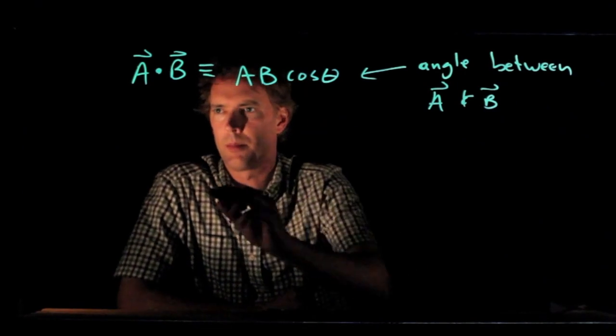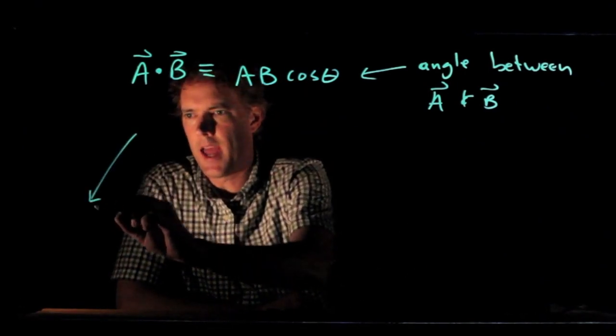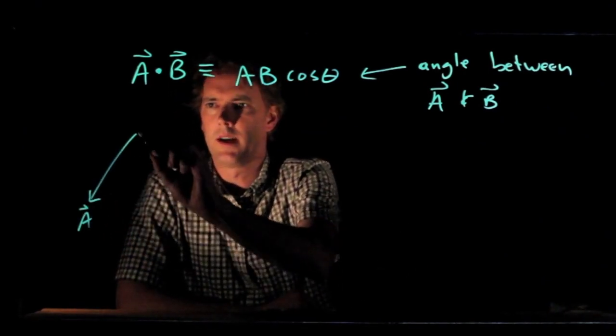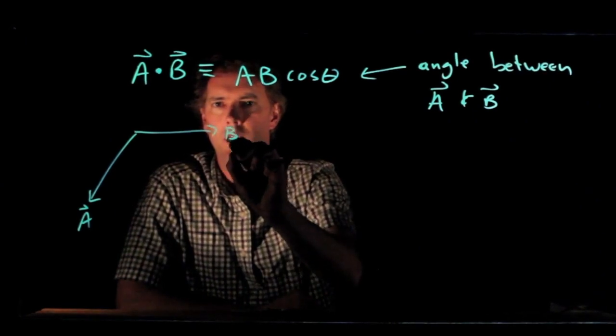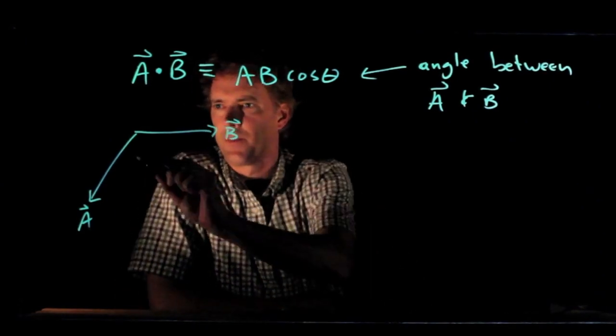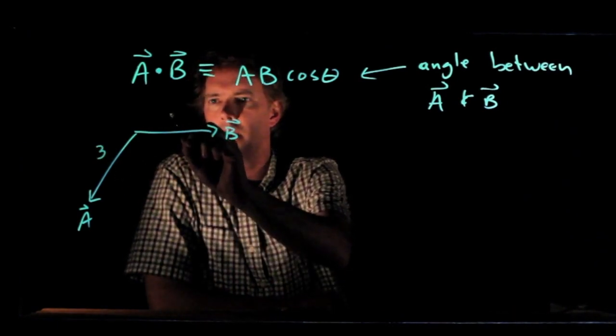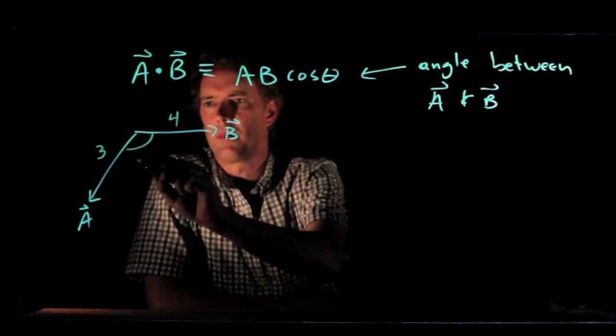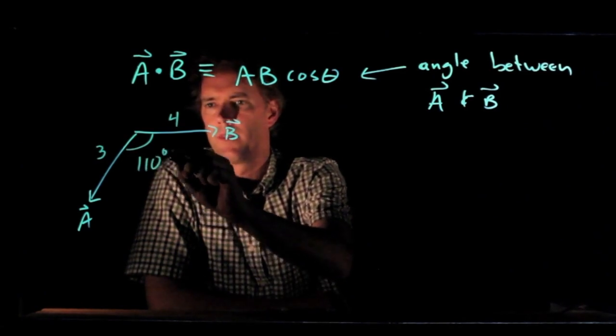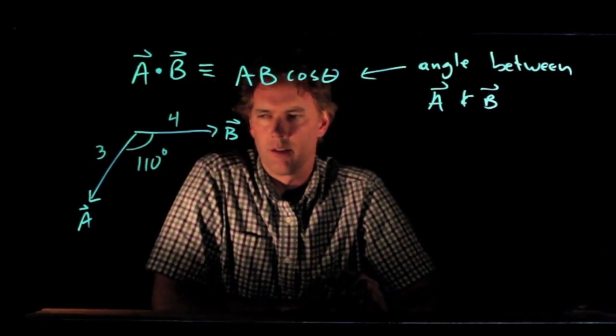Okay, so let's try this for a couple examples. Let's say we have vector A pointing down like so, vector B pointing to the right, and we will give these a couple magnitudes. A has magnitude 3, B has magnitude 4, and let's say that angle is 110 degrees.